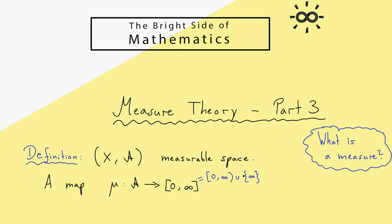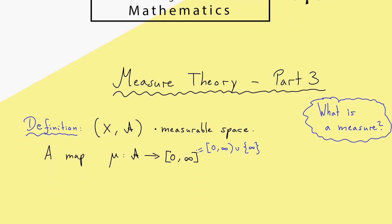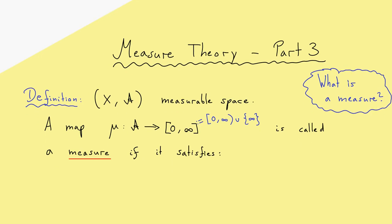How to calculate with this new symbol I'll tell you later. First, such a map is called a measure, but only if the following two conditions are fulfilled. We want to measure subsets of the set X, meaning we want to give a volume — a generalized length or volume — to such a subset. Therefore it makes sense to restrict to the non-negative reals including zero and the symbol infinity.